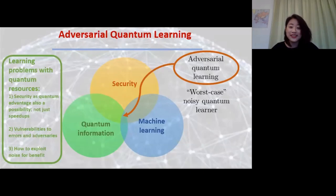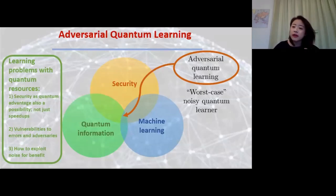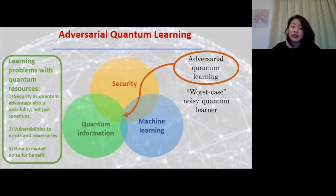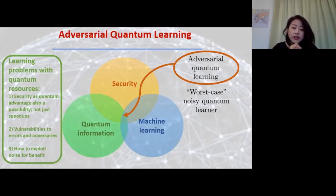There are many possibilities for questions in the center of this diagram. One big motivation when thinking about this is noticing how many quantum algorithms—and quantum algorithms for machine learning—rely quite heavily on speed-ups as motivation. But talking to classical machine learning people, a lot of them are not that particularly interested in speeding up the computation—it's not really their main bottleneck. They have other concerns, particularly concerns with security. The natural question for a quantum person is: can quantum resources help with security advantages in machine learning algorithms?